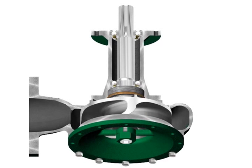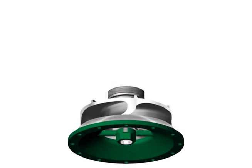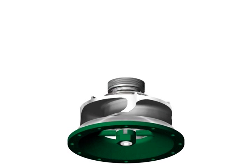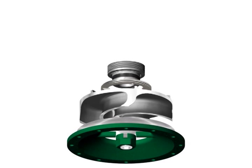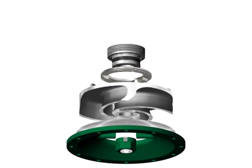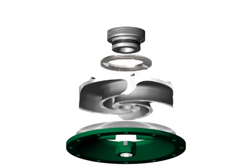The Vaughan Chopper Pump is a centrifugal pump with the unique ability of chopping all incoming solids prior to pumping. This not only protects the pump from clogging, but also provides added benefit to downstream components and processes.